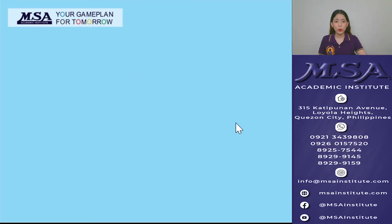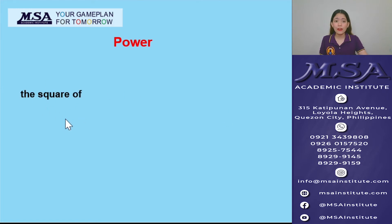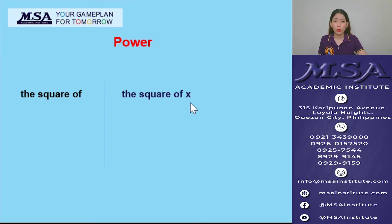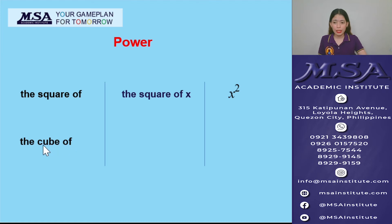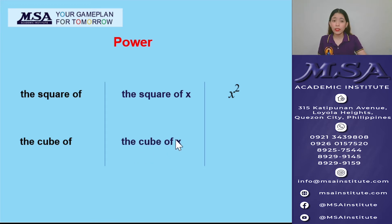Now that we're done with the basic operations, let's have powers. 'The square of' means raised to the power of 2. Example: 'the square of x' translates to x raised to 2 (x²). 'The cube of' means raised to the power of 3. Example: 'the cube of x' translates to x raised to 3 (x³).